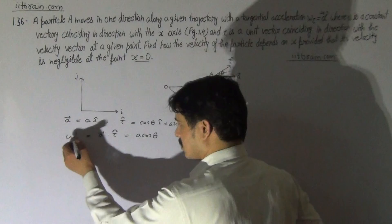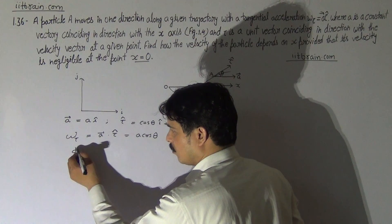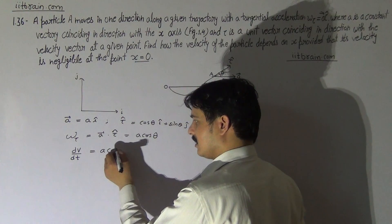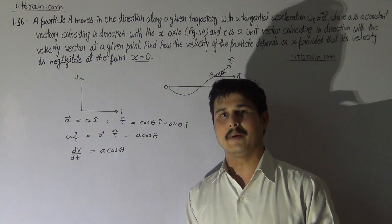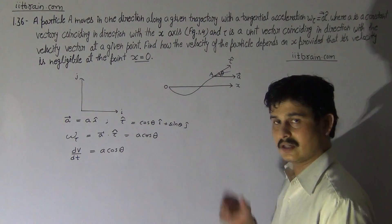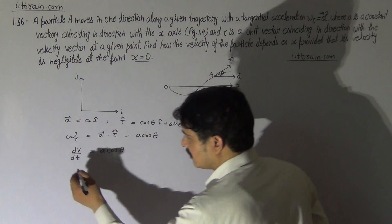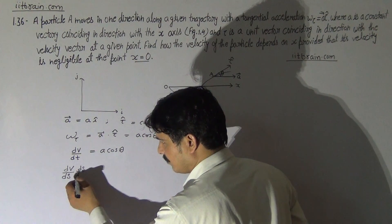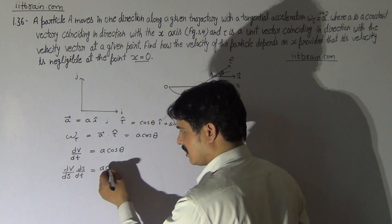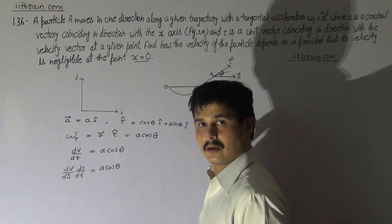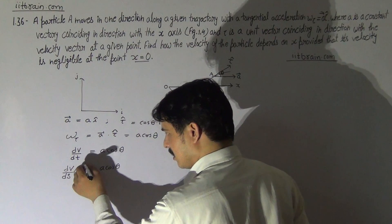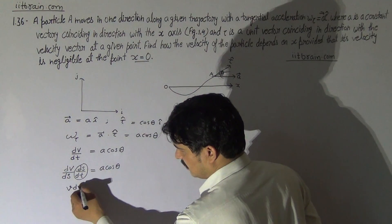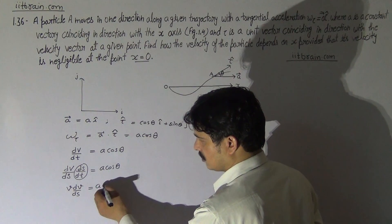Tangential acceleration can be written as dV/dt, so dV/dt = A cosθ. Now dV/dt can be rewritten using the chain rule: dV/dt = (dV/dS)·(dS/dt) = A cosθ. Since dS/dt is the speed V of the particle, we get V dV/dS = A cosθ.